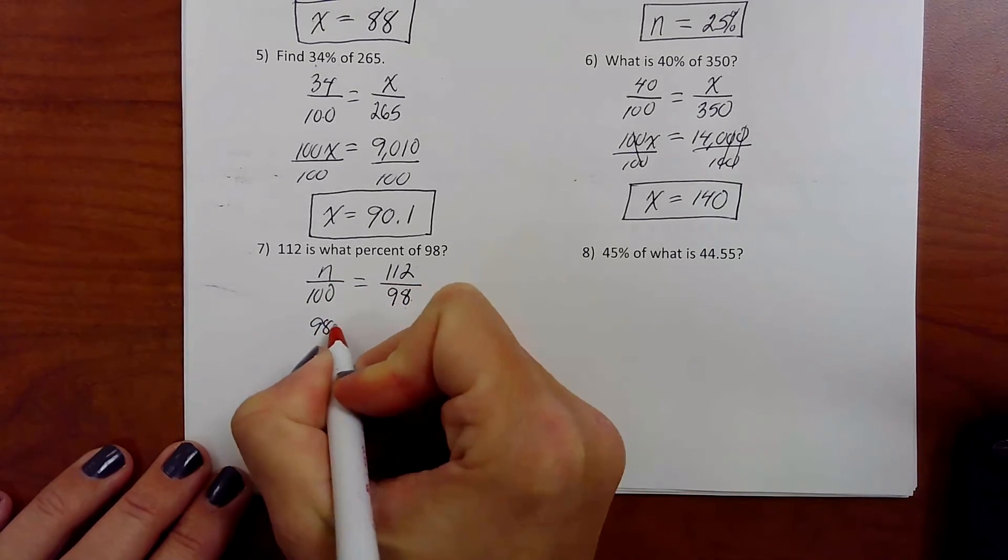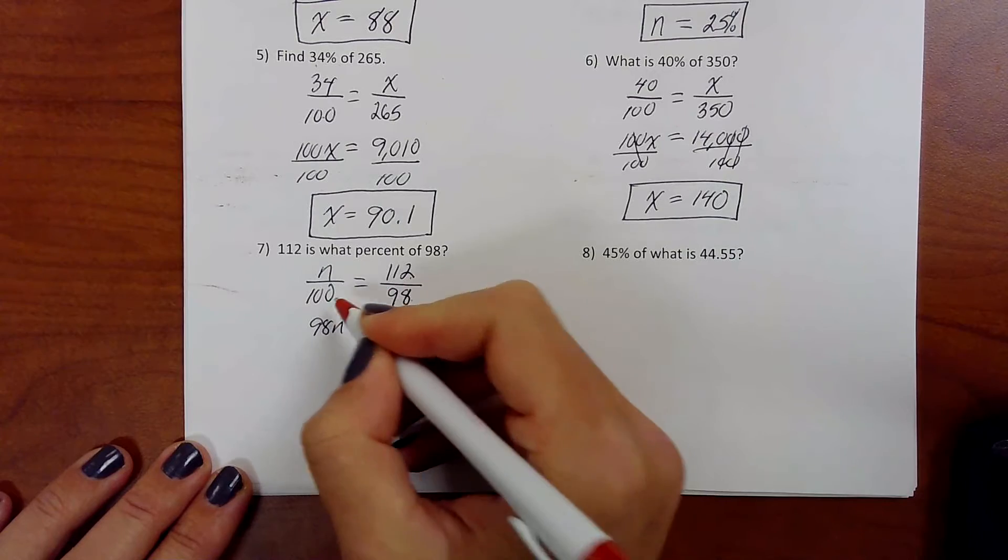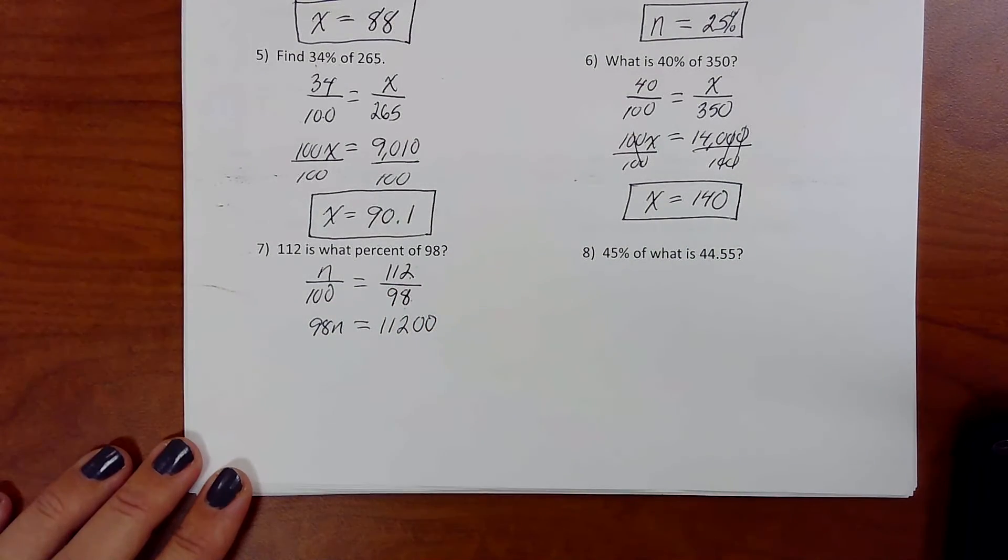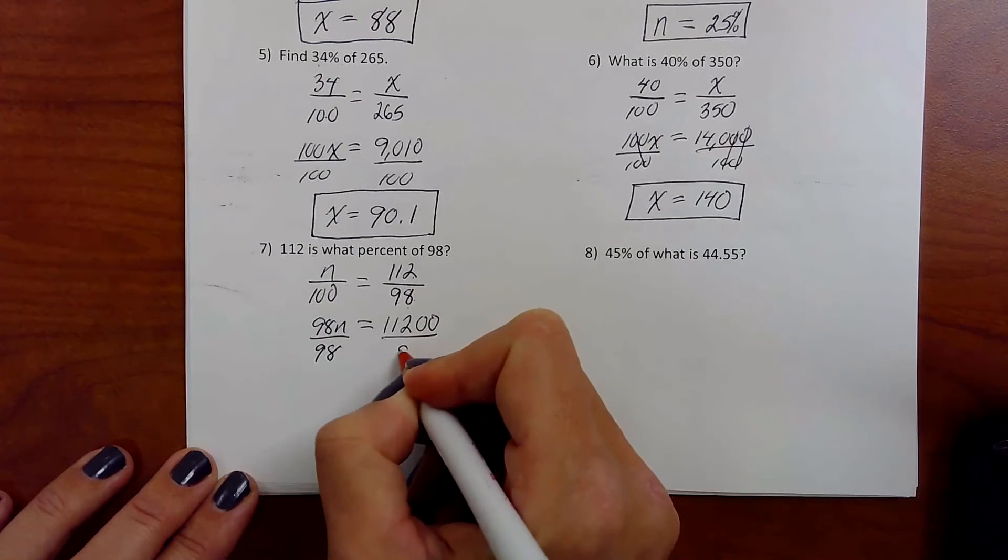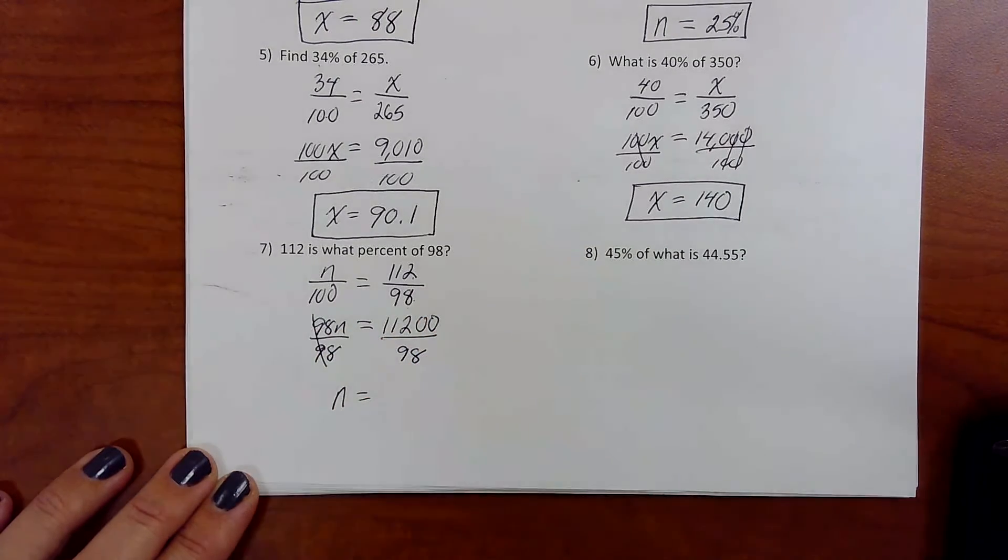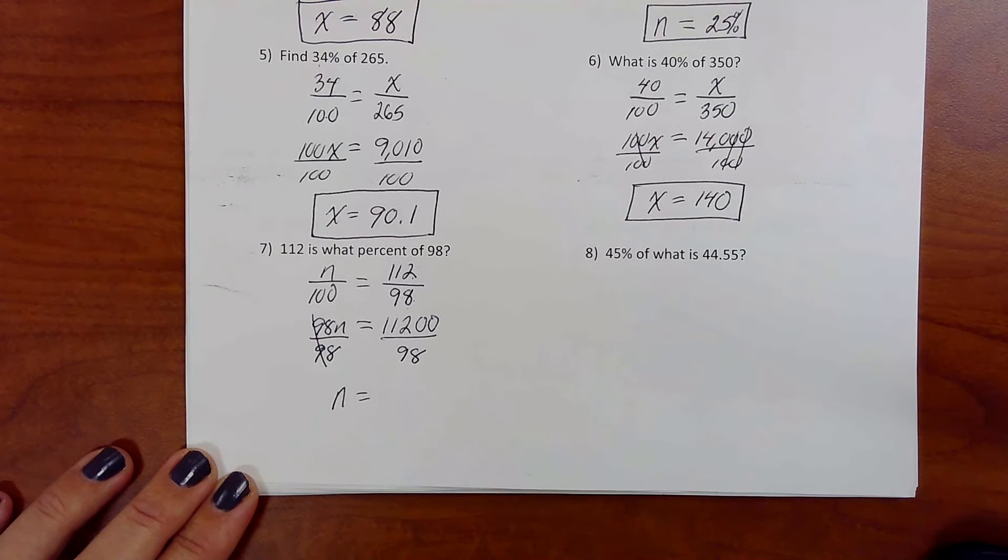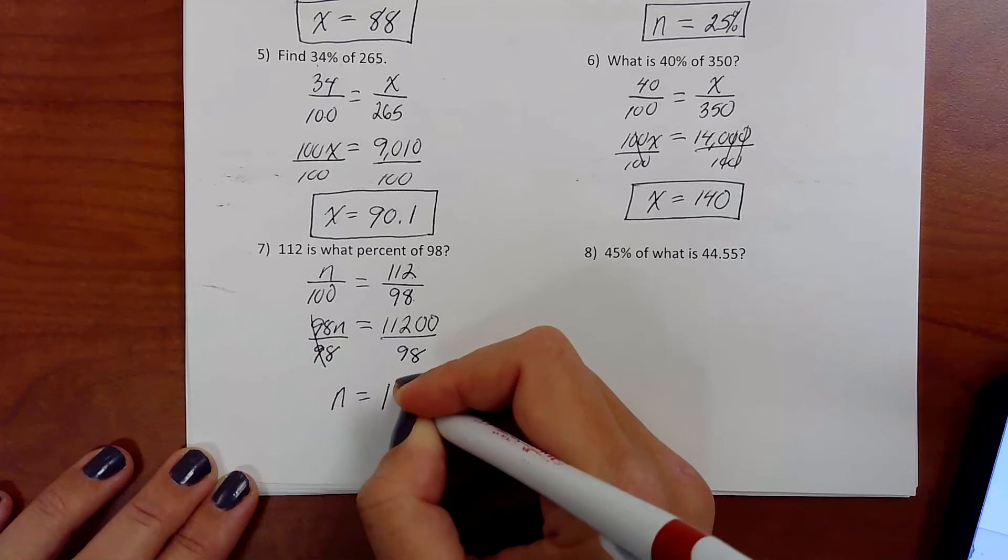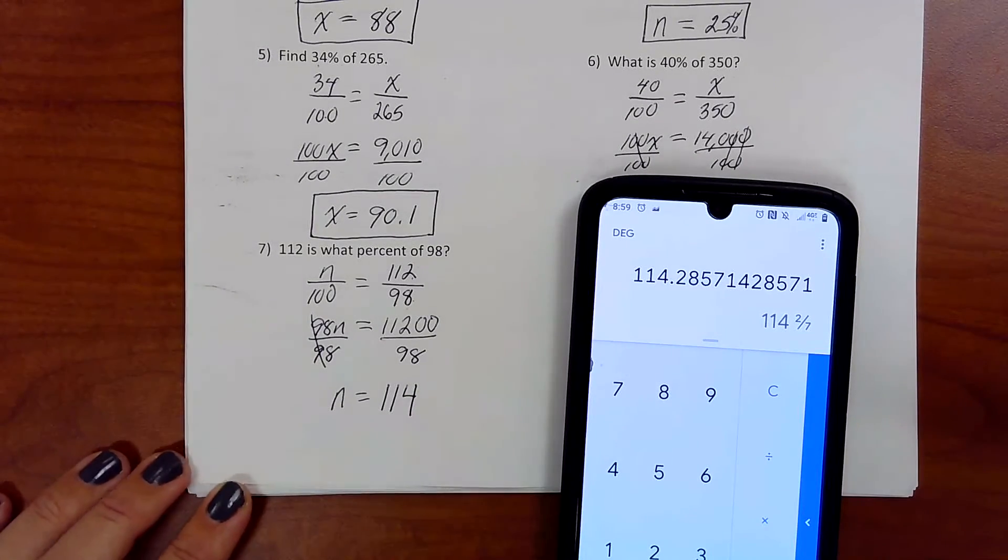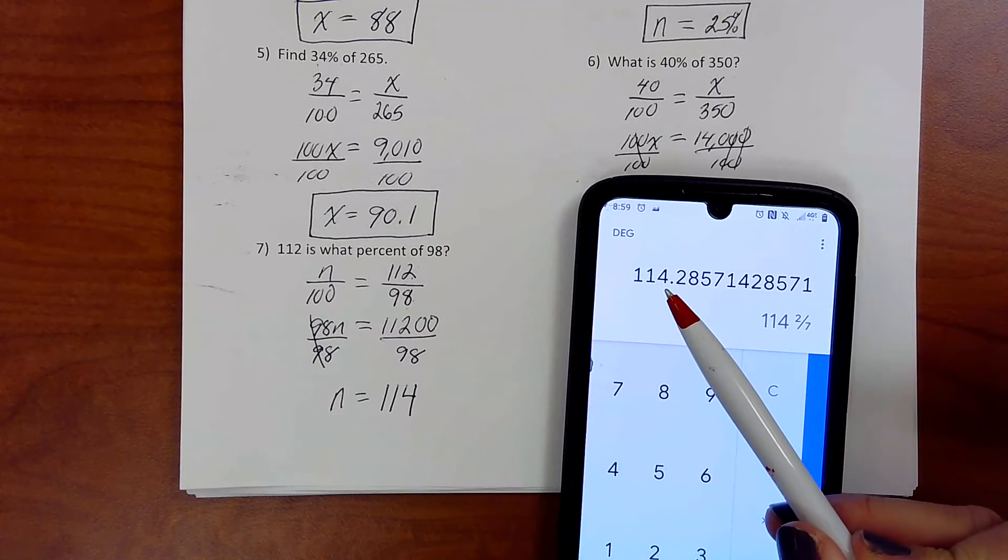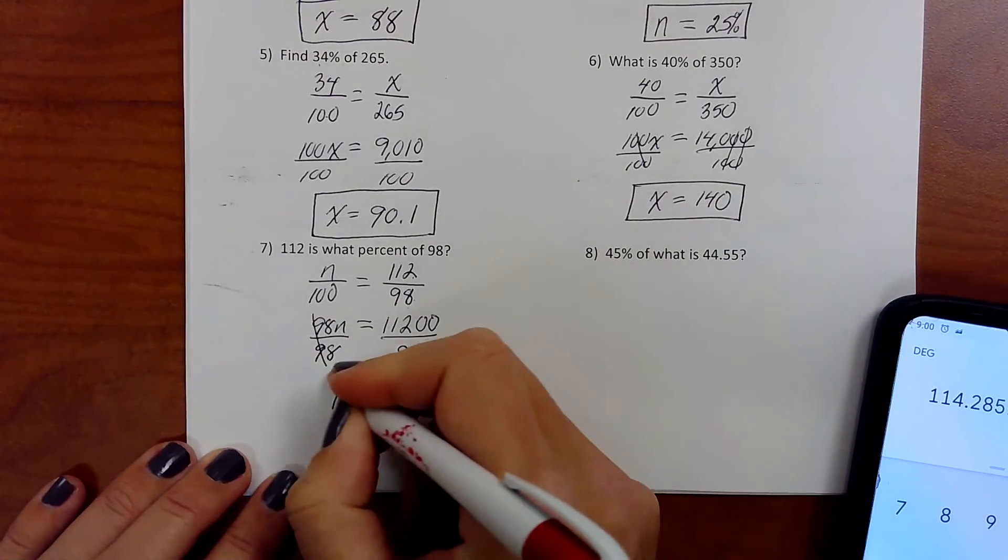98 times n, 98n. 112 times 100, 112 with two more zeros. How do you get n by itself? Divide. Okay, let's see if I was right. 11,200 divided by 98. Yeah. It's over 100. So, and I wish I did say to round. Let's just round it to the nearest percent. So I got 100. I'll show you what I got. 114.28. So, we're going to round to the whole percent there. That's a two, so I'm going to leave it. Right? 114%. Yeah.